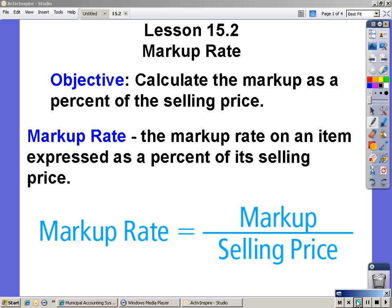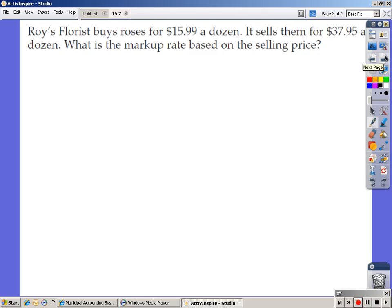Moving right along. Here's our one and only example for today. Roy's Florist buys roses for $15.99 a dozen. It sells them for $37.95 a dozen. What is the markup rate based on the selling price?